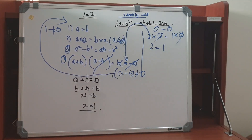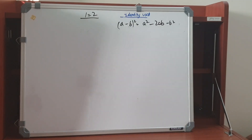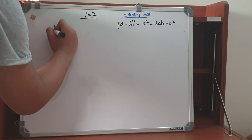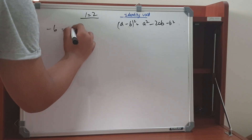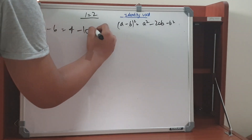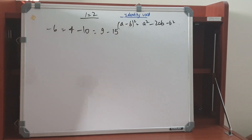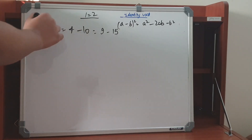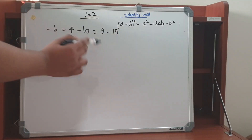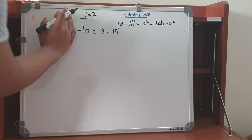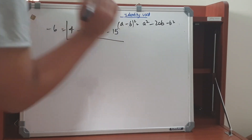Let's move to another method which is correct. The next step: we will take minus 6 is equal to 4 minus 10, which is equal to 9 minus 15. We can verify: 4 minus 10 is minus 6, and 9 minus 15 is also minus 6.